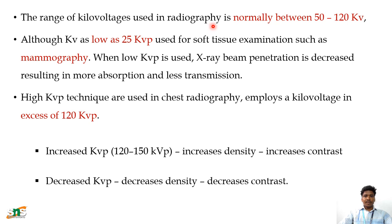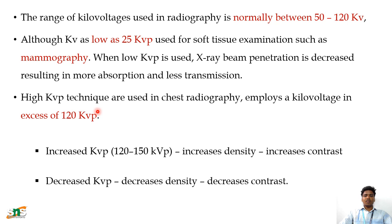In radiography, we normally use a range of KVP between 50 to 120. Although KVP as low as 25 KVP is used for soft tissue examinations such as mammography or nasopharynx. When low KVP is used, X-ray penetration is decreased, resulting in more absorption and less transmission. But when applying the High KVP technique in the range of 120 KVP, which increases penetration, it is used in chest radiography and abdomen radiography, etc.